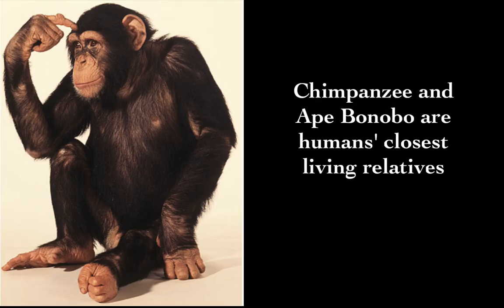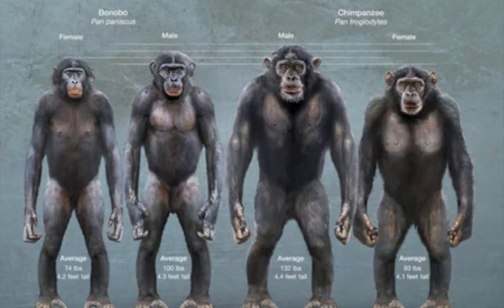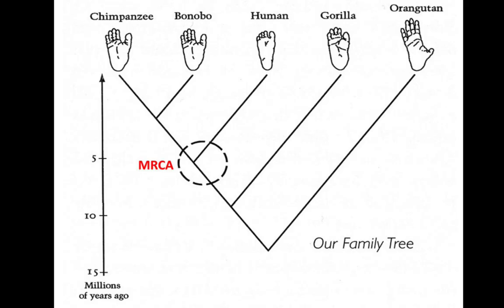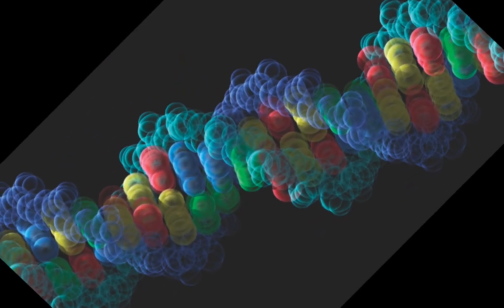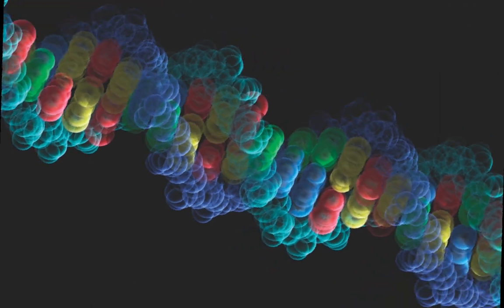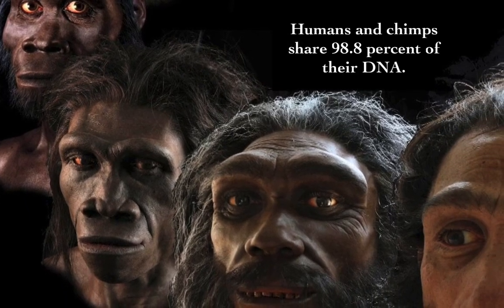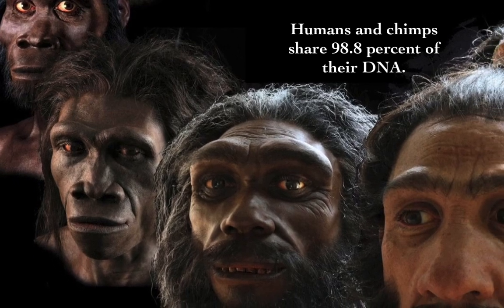The chimpanzee and another ape, the bonobo, are humans' closest living relatives. These species look alike in many ways, both in body and behavior. For a clear understanding of how closely they are related, scientists compare their DNA — an essential molecule that's the instruction manual for building each species. Humans and chimps share a surprising 98.8% of their DNA.